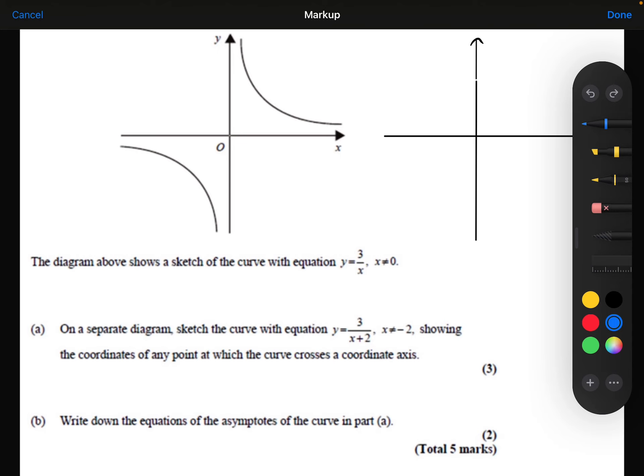Part A. On a separate diagram, sketch the curve with the equation y equals 3 over x plus 2, where x can't equal minus 2. We need to show the coordinates of any point at which the curve crosses a coordinate axis.